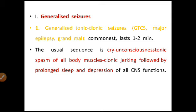The first type of seizure is the generalized tonic-clonic seizure, also called GTCS, major epilepsy, or grand mal epilepsy. This is the commonest type, lasting one to two minutes. The usual sequence is: cry, then unconsciousness, then tonic spasm of all body muscles, then clonic jerking, followed by prolonged sleep and depression of all CNS functions.